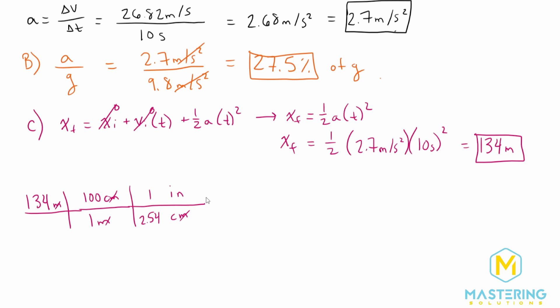Now centimeters cancel and we're in inches. Lastly, we want to go from inches to feet. So inches will be down here and feet will be on the top. So in one foot there are 12 inches. And now we have what we need.